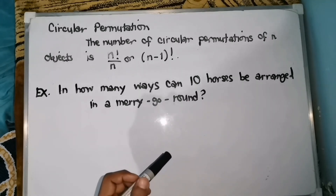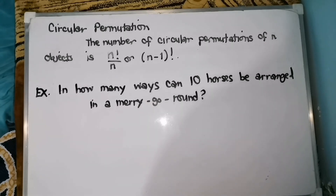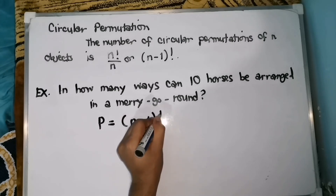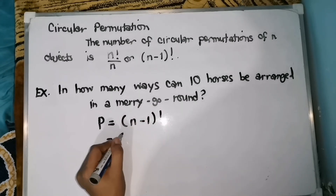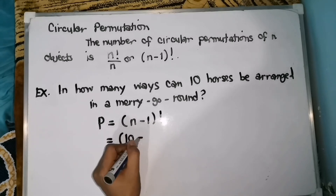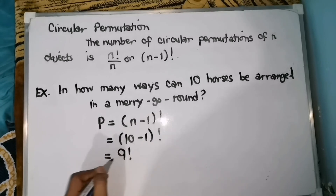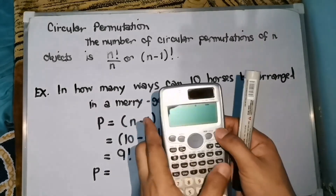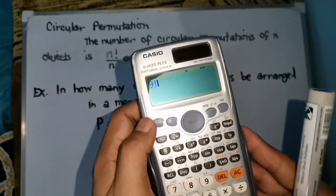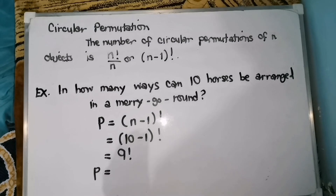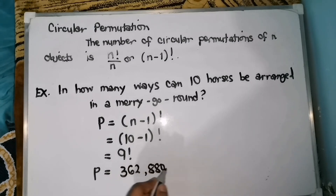Of course, we are going to use the formula for circular permutation. That is P equals to the quantity n minus 1 factorial — our n is 10 because there are 10 horses — minus 1 factorial. So, 10 minus 1 is 9 factorial. And 9 factorial is equal to 362,880. So, 362,880 ways.